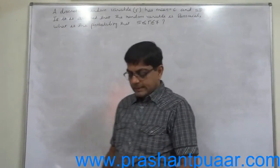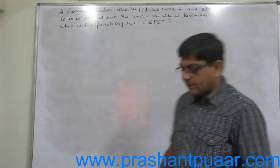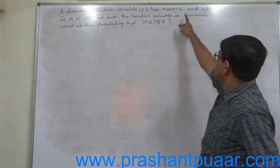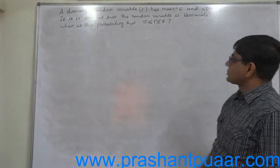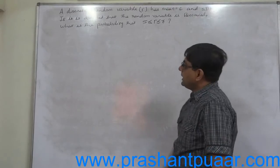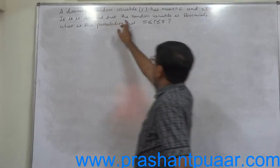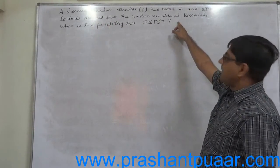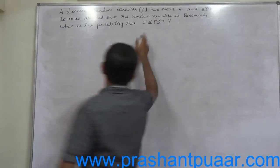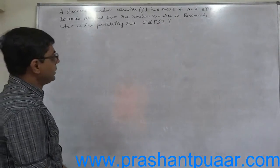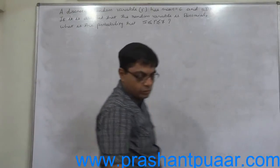In the new question, a discrete random variable r has mean 6 and standard deviation √2. If it is assumed that the random variable r is binomial, what is the probability that 5 ≤ r ≤ 7?